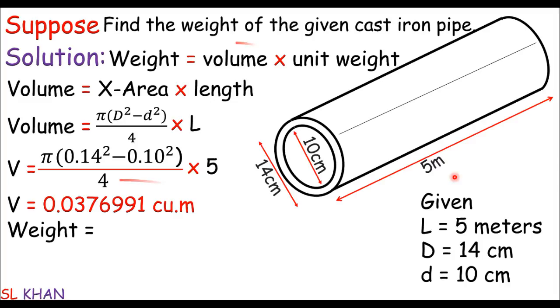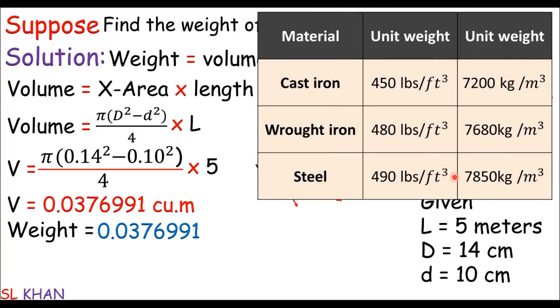Like the weight equals the volume is known, we did describe few seconds ago, times the unit weight of the material. This means the unit weight of those material which the pipe is made of. So the unit weight of cast iron must be used, and that's of course just 7200 kg per cubic meters.